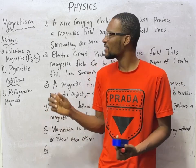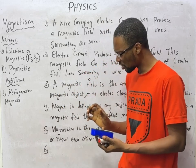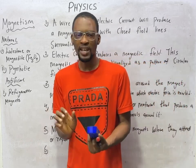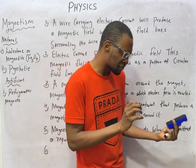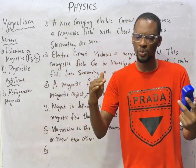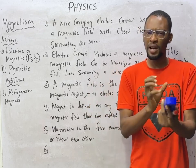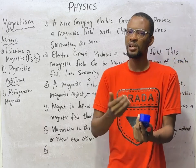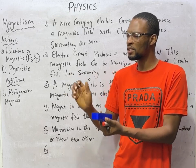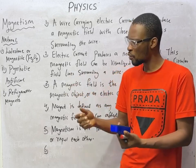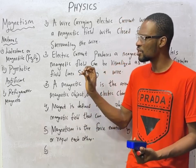Pyrrhotites are also examples of natural magnets. Artificial magnets are man-made and can be divided into temporary and permanent magnets. Temporary magnets retain their magnetism for only a short while, while permanent magnets retain it for a very long period. A good example of artificial magnets is the refrigerator magnet.